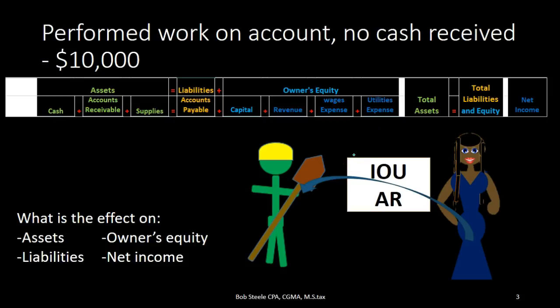If we have a transaction where we have done work and haven't yet received cash, we are going to recognize the asset of the receivable — the IOU. We're going to put that IOU on the books. Cash is not affected, but we do have an IOU that is worth something because we have a contract to receive it in the future. Therefore, the IOU — the asset — is going to go up.